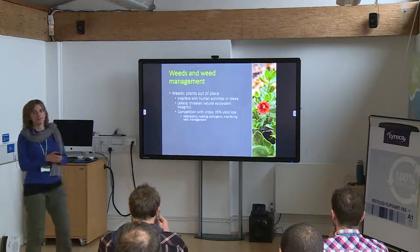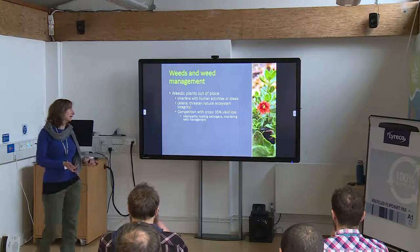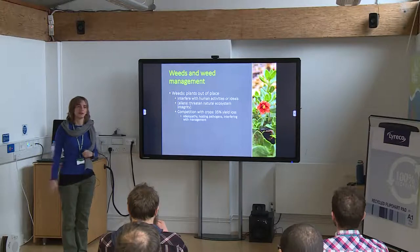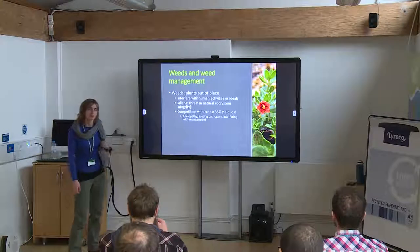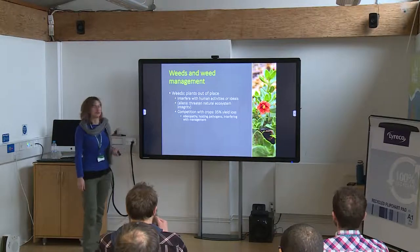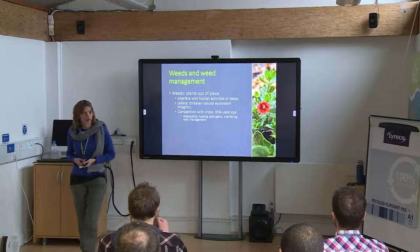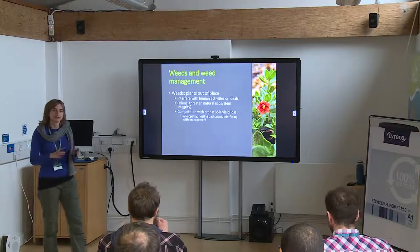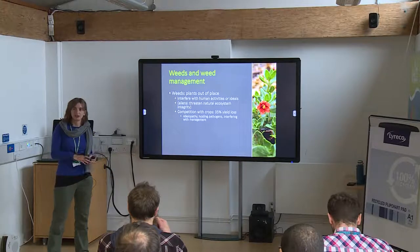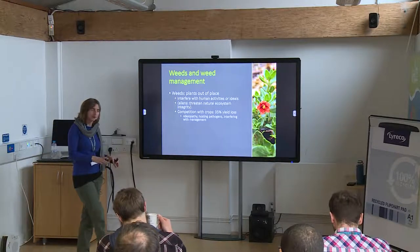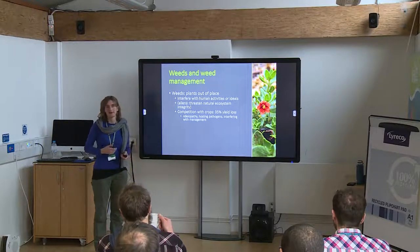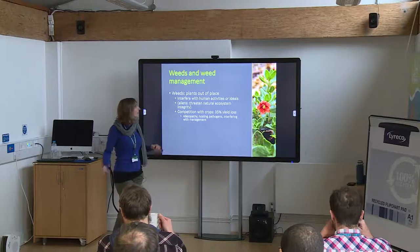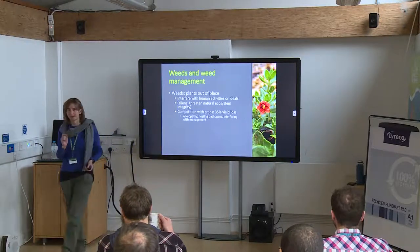Starting with what a weed is — the easiest definition is a plant out of place. It's an anthropogenic definition; we decide when a plant is out of place, when it interferes with what we want to do. In agriculture it obviously interferes with our ability to produce as much food as we'd like. One part of the definition that is less anthropogenic is when the species are alien species — they've come from another country and get out of control in a new one, causing problems both for people and threatening natural ecosystems.